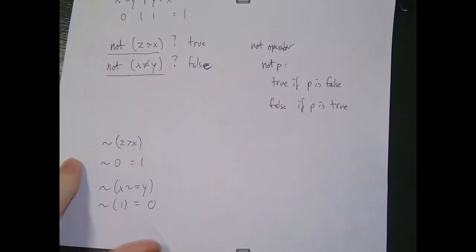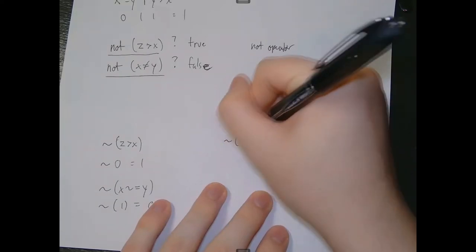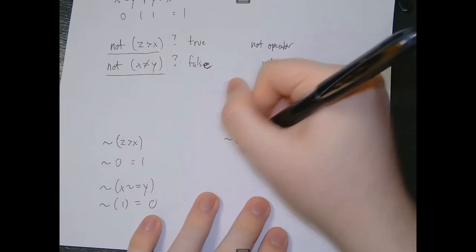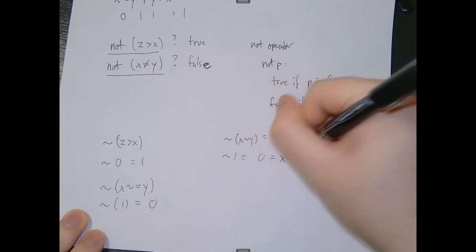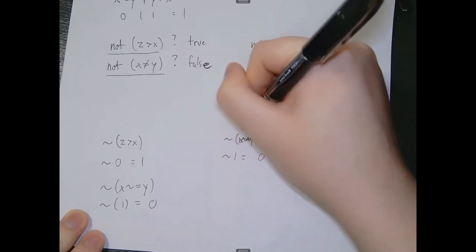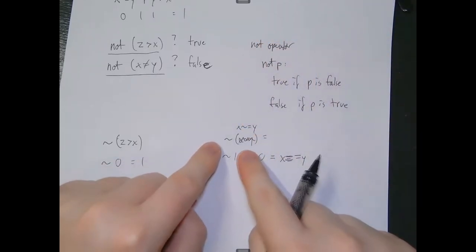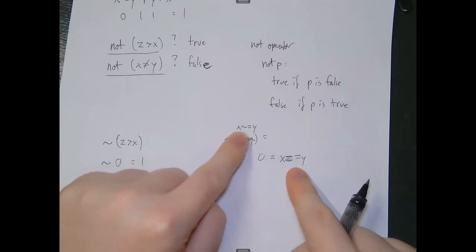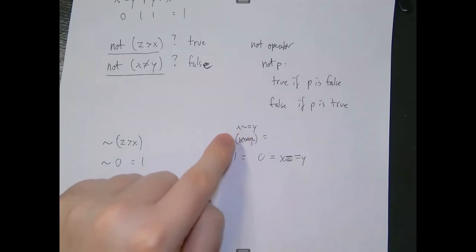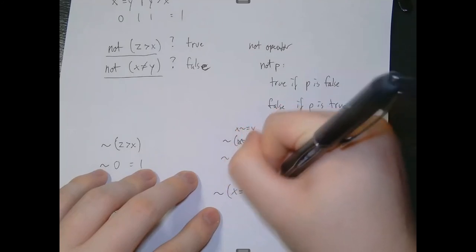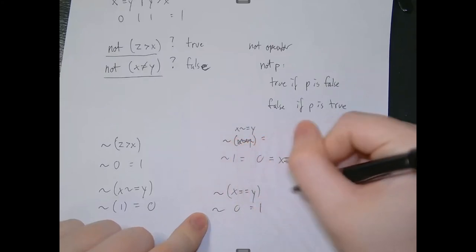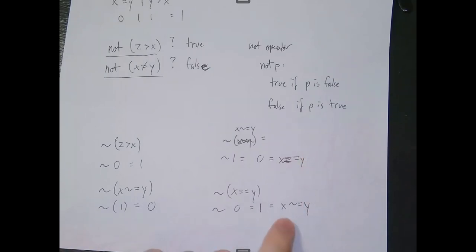The use of tilde in both the not operator and the not equal to operator isn't a coincidence. Not(x ~= y) equals ~1, which is 0 — the same as saying x == y. And if we take not(x == y), that gives us ~0, which is 1 — the same as saying x ~= y. So we're using this tilde in a similar sense to saying 'not' an equal, and the use of tilde in both cases is very intentional.